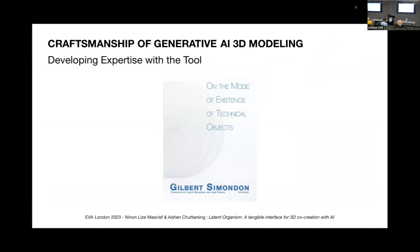Latent Organism empowers people to master AI's imagination. As they interact with and explore the beanbag chair, they gradually develop an intuition of the cartography of the latent space. This artwork aims to develop a new kind of expertise — a craftsmanship of artificial imagination modeling — particularly relevant when manipulating a high level of complexity system such as generative 3D, which is usually non-graspable and opaque for non-expert users.